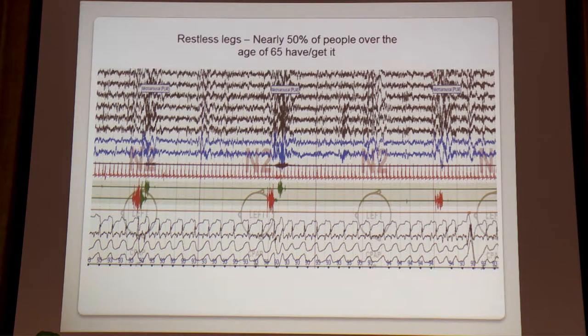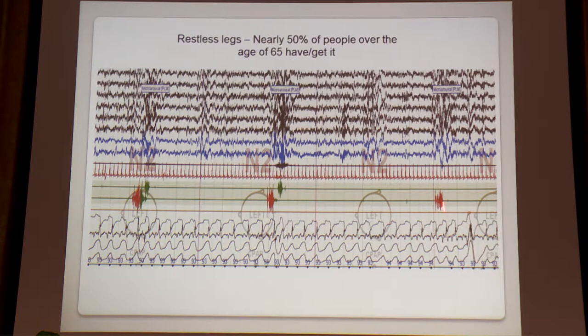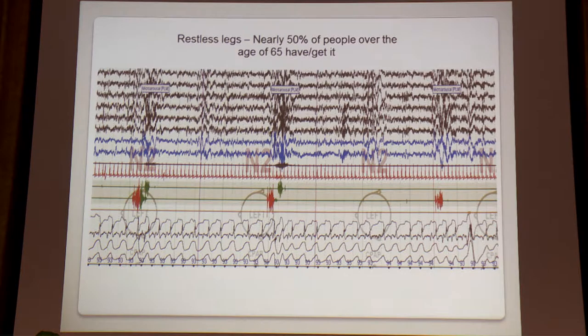Here's a polysomnography recording showing restless legs. We have EMG muscle electrodes on the legs. This patient jerks his leg, has an arousal, jerks his leg, has another arousal — woken up three times in two minutes because of leg jerking. Nearly 50% of people over the age of 65 either have it or develop it.